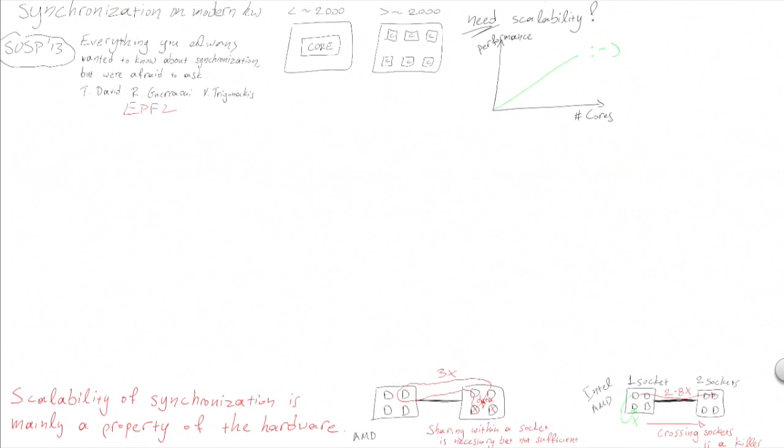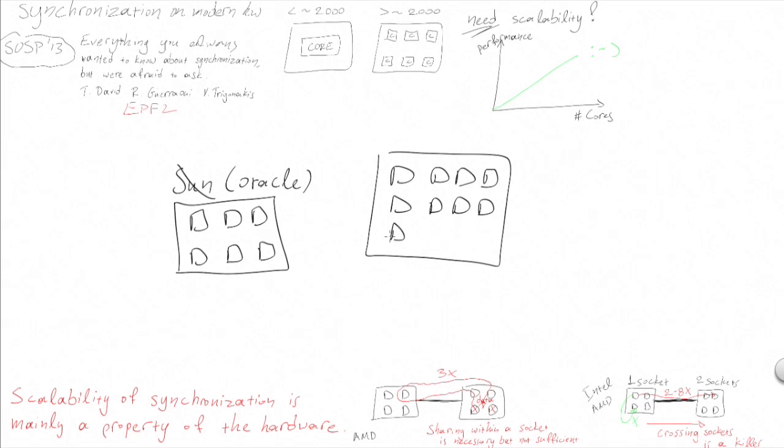Now that we have covered the intricacies of processors with multiple sockets, let's see whether our lives become much simpler on single socket processors. To this end, we consider two modern many-cores, one from Sun, which now belongs to Oracle, and one from Tilera.